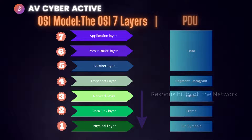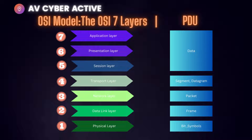Also, the Protocol Data Unit, or PDU, is different at different layers. For the physical layer, the data unit is symbols, bits, ones and zeros. The data link layer uses frames. The network layer uses packets. The fourth layer uses datagrams or segments, and for layers five, six, and seven, the unit is simply data.